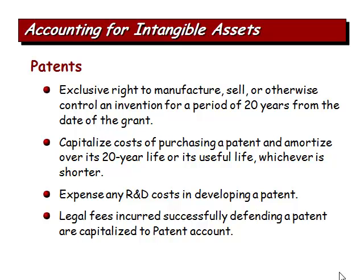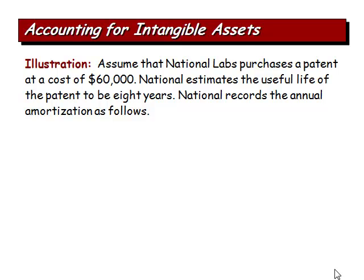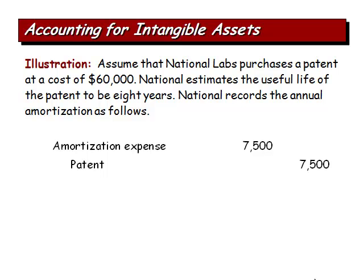Patents give the exclusive right to manufacture, sell, or control an invention for 20 years from the date of the patent. We capitalize the cost of purchasing a patent and amortize it over its 20-year life or its useful life, whichever is shorter. Any R&D costs incurred in developing a patent are expensed. Legal fees incurred in successfully defending a patent can be capitalized. Example: National Labs purchases a patent for $60,000 with an estimated useful life of 8 years — annual amortization is $7,500, recorded as debit amortization expense, credit patent.